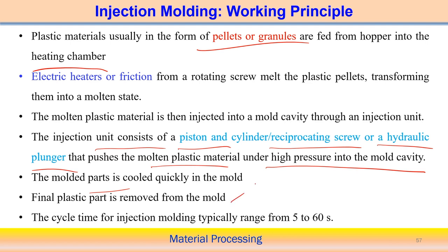The typical cycle time for injection molding is around 5 to 60 seconds, making it a very fast process. That is why it is the most widely used process — almost one third of all plastic components are manufactured by injection molding.